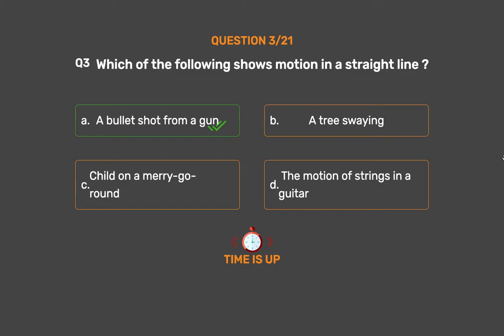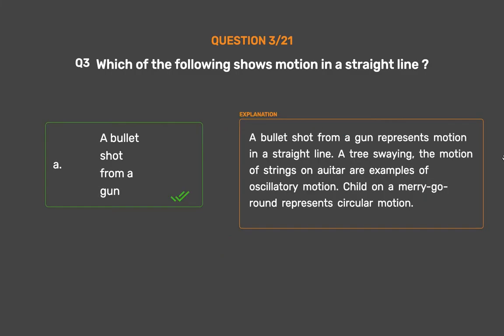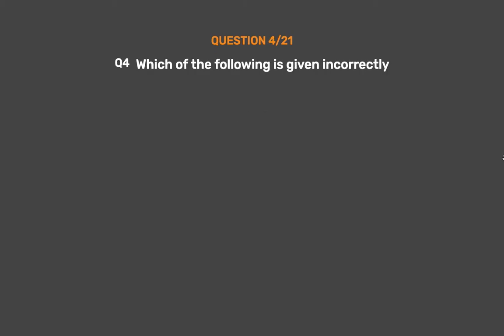The correct answer is Option A: A bullet shot from a gun. A bullet shot from a gun represents motion in a straight line. A tree swaying and the motion of strings on a guitar are examples of oscillatory motion. A child on a merry-go-round represents circular motion.